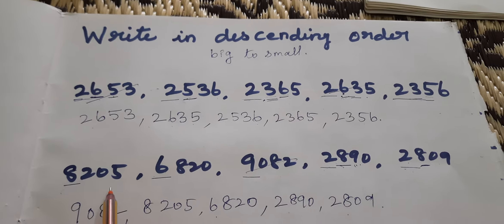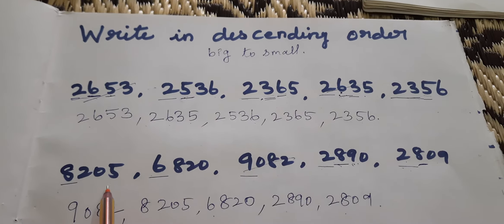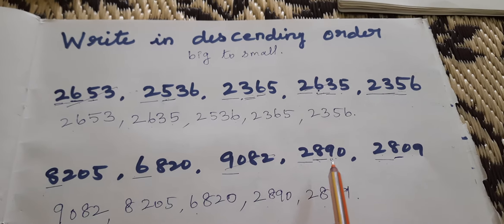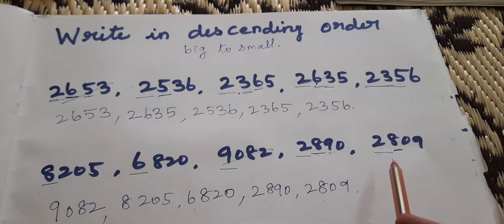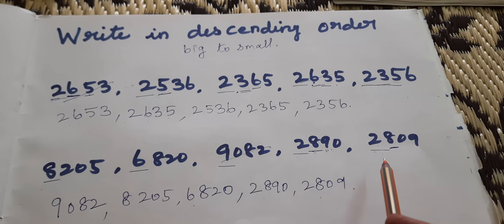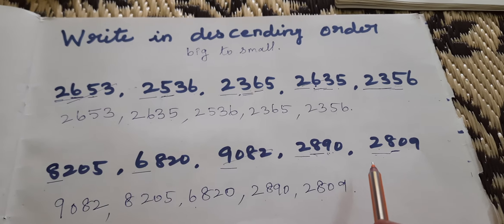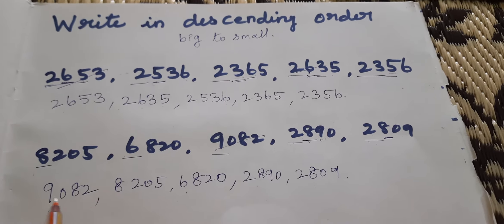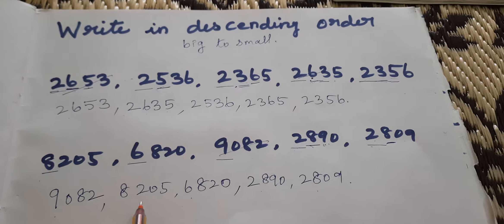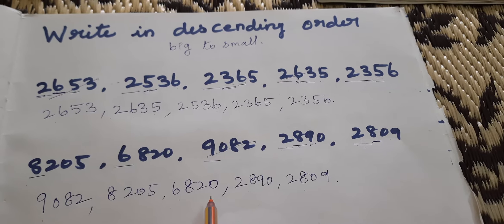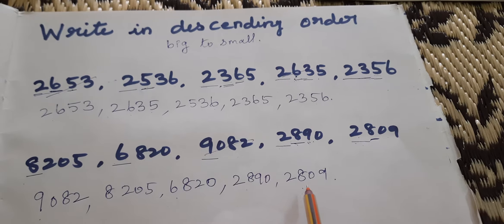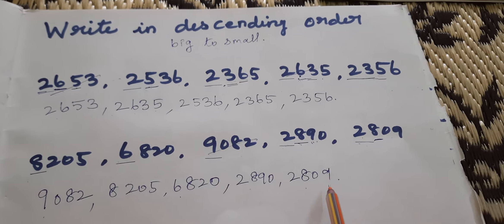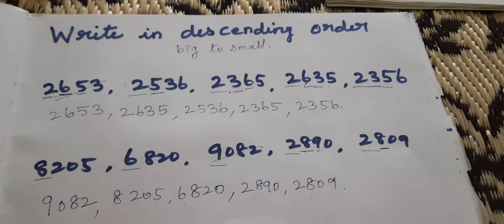8205, 6820, 9082, 2890, 2809. Write in descending order. Descending order means big to small: 9082, 8205, 6820, 2890, 2809. Big to small. Descending order.